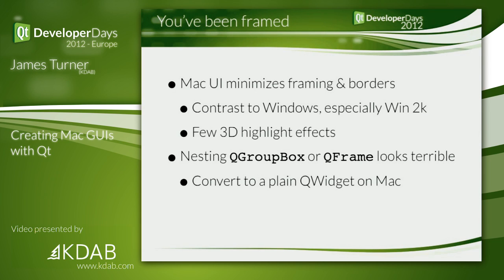The next really important one is framing. The Mac UI minimizes framing and borders — we used to have a window border, now we have nothing, not even a one-pixel line, just a drop shadow. Not just on windows but around widgets, groups, and boxes too. We generally don't have four or ten pixel gaps — we have single pixel lines or maybe nothing. That's in complete contrast to, say, Windows 2K. There are also fewer 3D highlight effects; the emphasis on Mac is flatness, possibly with a gradient background, but minimal borders and spacing.